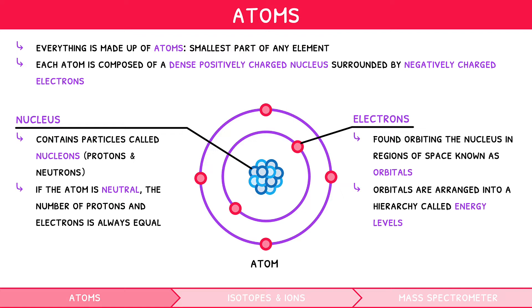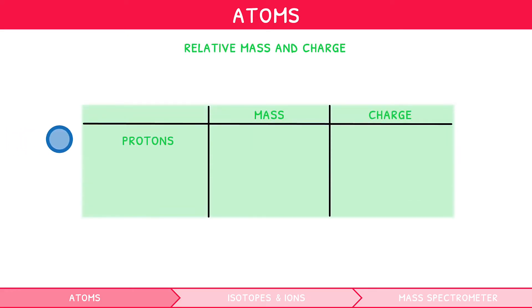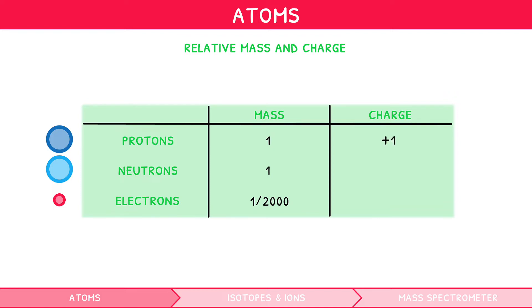This will be explored further in our second video in our IB Chemistry Topic 2 video series. When looking at the relative mass and charge of protons, neutrons and electrons, we can say that protons and neutrons have a relative mass of 1, and an electron, given that it is very small, has a relative mass of 1 over 2000, or 0.005. For relative charges, protons have a relative charge of +1, neutrons are neutral with a relative charge of 0, and electrons have a relative charge of −1.